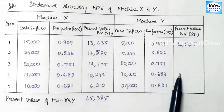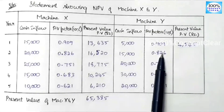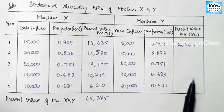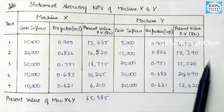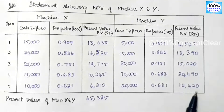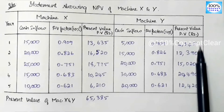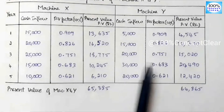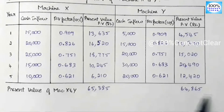For the second, third, fourth, and fifth years, we multiply each cash inflow by the corresponding PV factor. The total present value for machine Y across 5 years is 64,665.